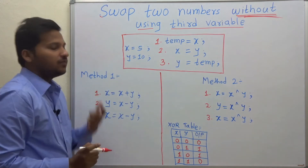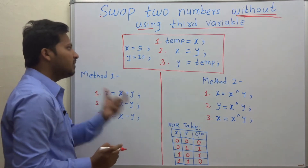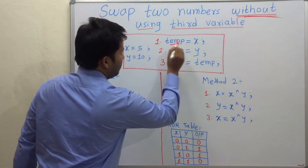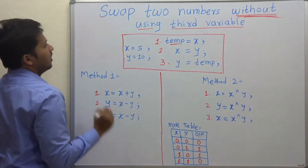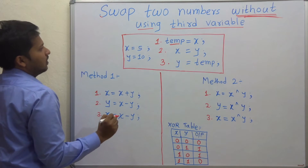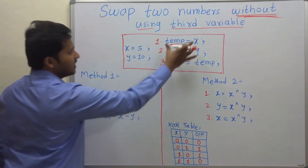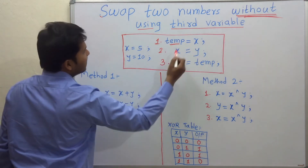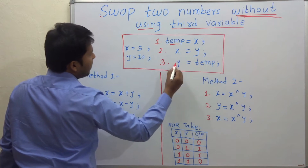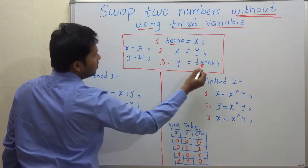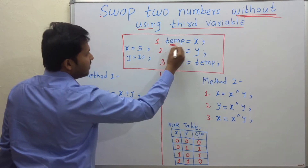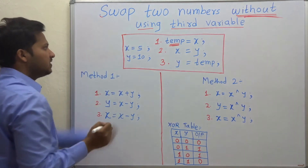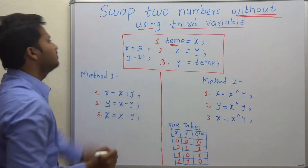First, we will see the method in which we use the third variable. As you all are aware of this method: temp is equal to x, x is equal to y, and y is equal to temp. This temp is that third variable which is used in this method.